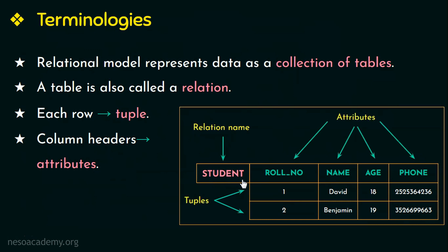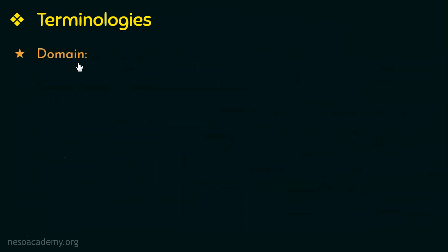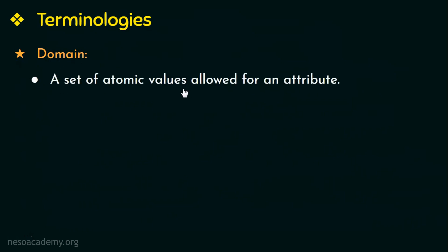The next terminology is domain. A domain in mathematics is a set of possible values that you can input. Similarly, in relational database, a domain is a set of values that are allowed for an attribute, and these values should be atomic — that is, each value in that domain is not divisible further.